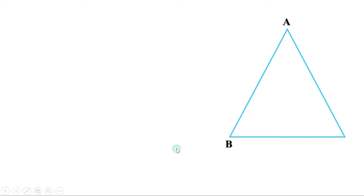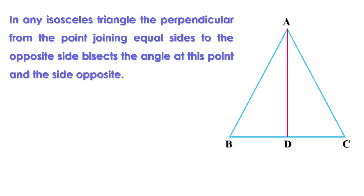Now let us recall another point which you have learned in a previous standard. Consider an isosceles triangle ABC, where AB and AC are equal sides. If you draw a perpendicular from A to BC, it bisects the angle at A and the side BC. That means the two angles are equal and BD and CD are equal. In any isosceles triangle, the perpendicular from the vertex joining the equal sides to the opposite side bisects the angle at that vertex and the opposite side. This line AD is called the perpendicular bisector of BC.